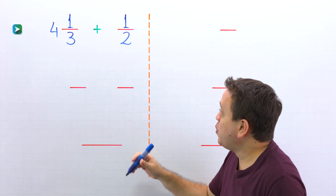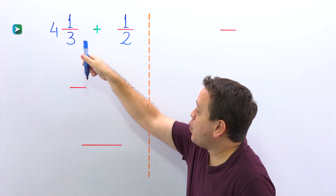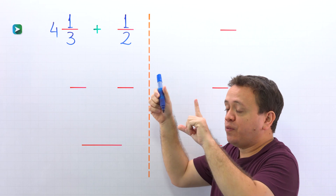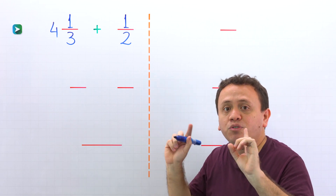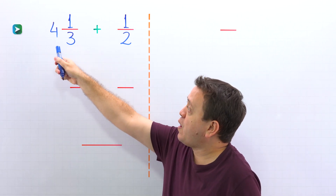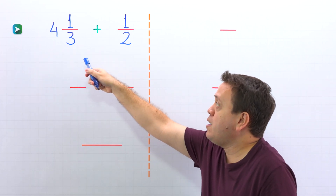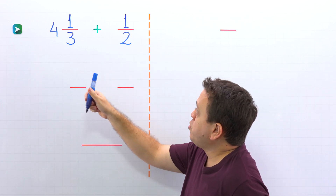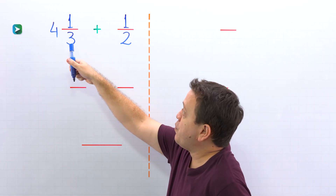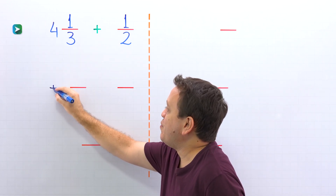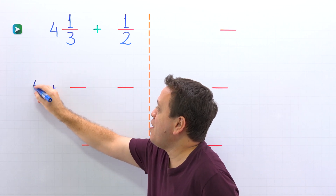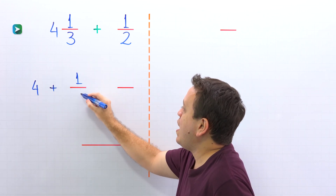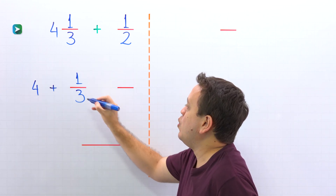Nice! In this example, we need to add 4 and 1 third plus 1 half. The key to solving this problem is to remember that a mixed number is the sum of a whole number and a proper fraction. So first, we're going to rewrite the mixed number 4 and 1 third as the sum of the whole number 4 and the proper fraction 1 third.